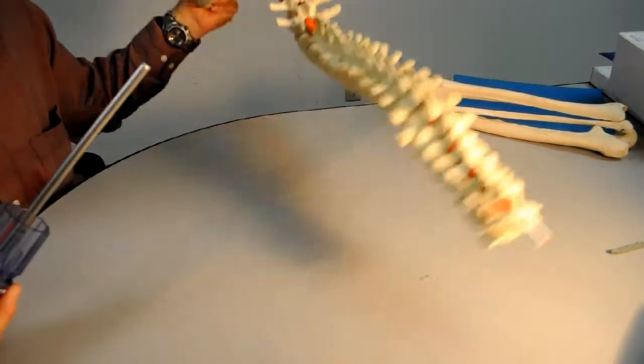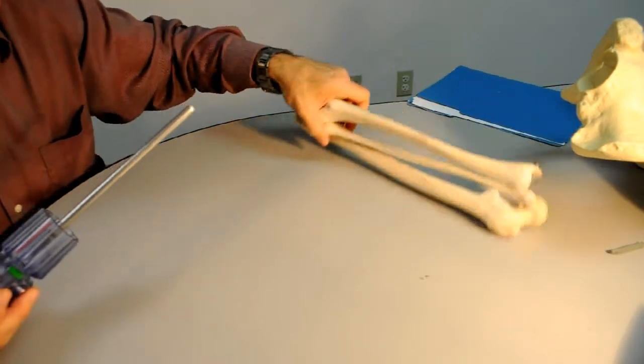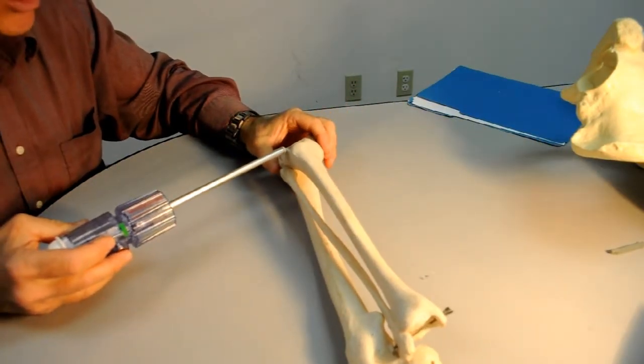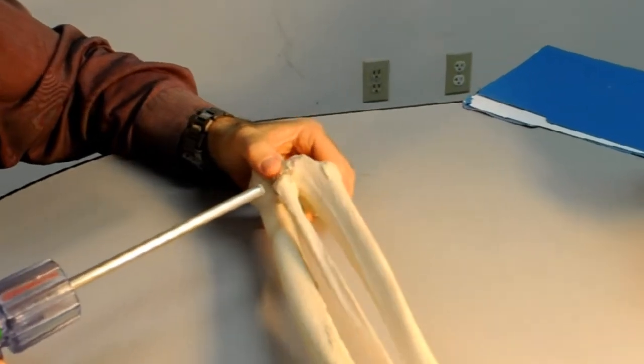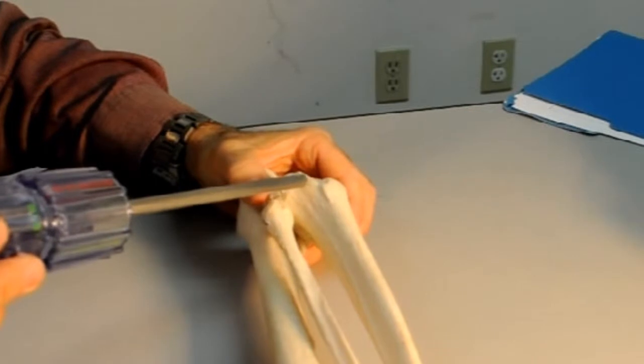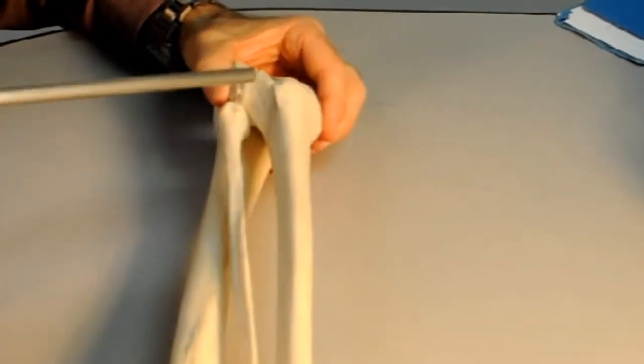For lateral decubitus and supine position patients, I would highly recommend one consider the proximal tibia. For the lateral decubitus patient, one would harvest bone from the proximal tibia in the lateral area, just lateral to the tibial tubercle.